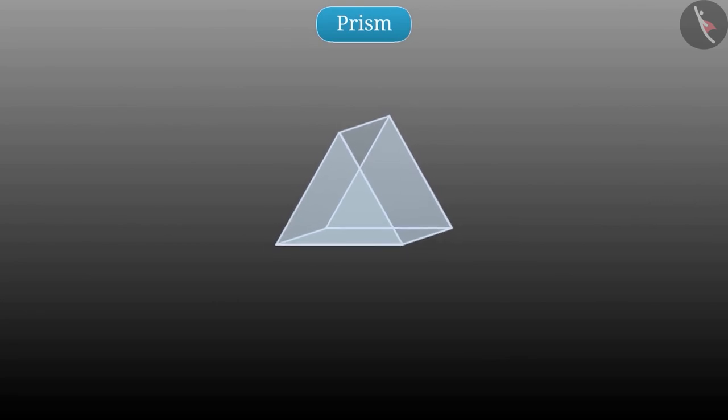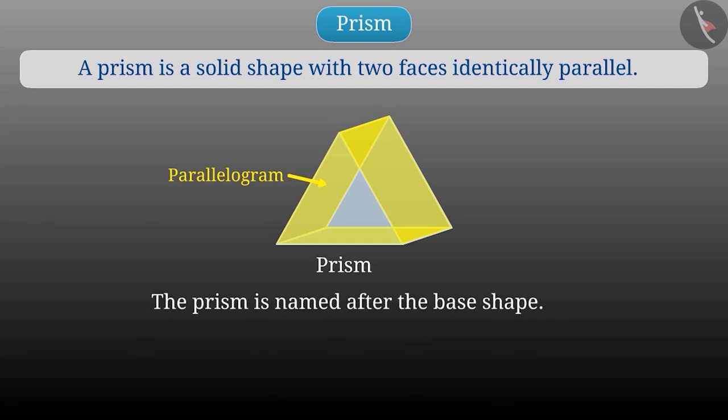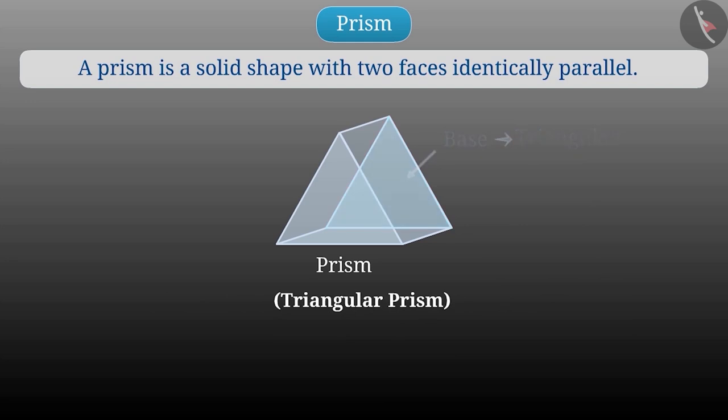Have you seen an object of this shape in your science lab? This is a prism. A prism is a solid shape whose two faces are identically parallel. One of these two faces is called the base and the other one is called the upper end. Apart from these two faces, the other faces of the prism are parallelogram. The prism is named after the base shape. As the base of this prism is triangular, so it is a triangular prism. You can see that this prism has five faces, nine edges and six vertices.